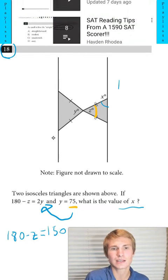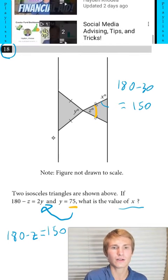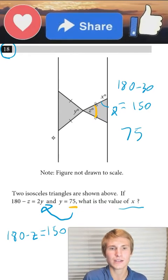So now I know that z is 30. Next thing I'm going to do is 180 minus that 30, which will give me 150, and I have to divide that 150 by 2 since it's an isosceles triangle. 150 divided by 2 I know will be 75.